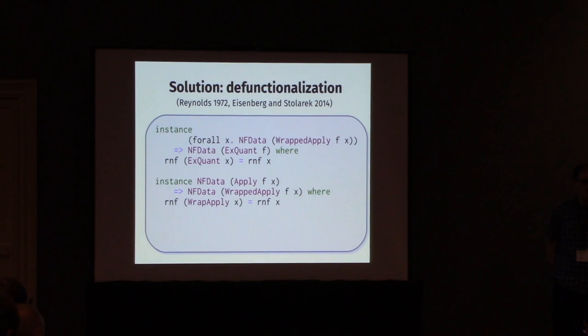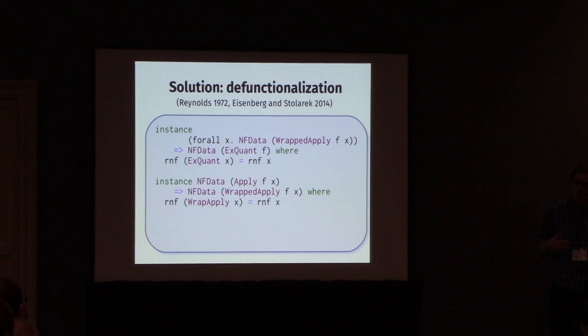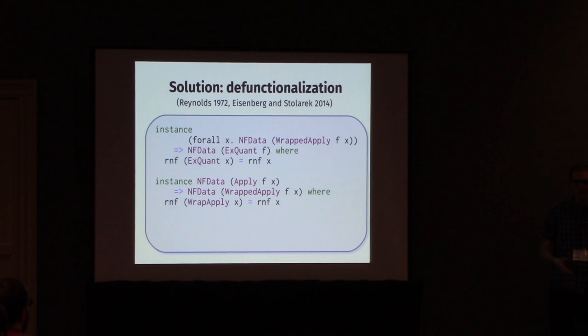What about deriving for the standard classes for GADTs? It can work - I didn't show examples for anything except NFData for time reasons, but in the Template Haskell prototype I do show some examples of how this would work for Eq, Show, Ord, and related classes whenever it's possible. One thing that's interesting is that if you have existentially quantified type variables appearing in the right places, then you can't derive Eq for it anymore. Because if you tried to compare things for boolean equality the naive way, they'd have different types. If you want to do that, you'd probably need to be a bit more creative in how you generate the code, but it should be possible. Let's thank Ryan.